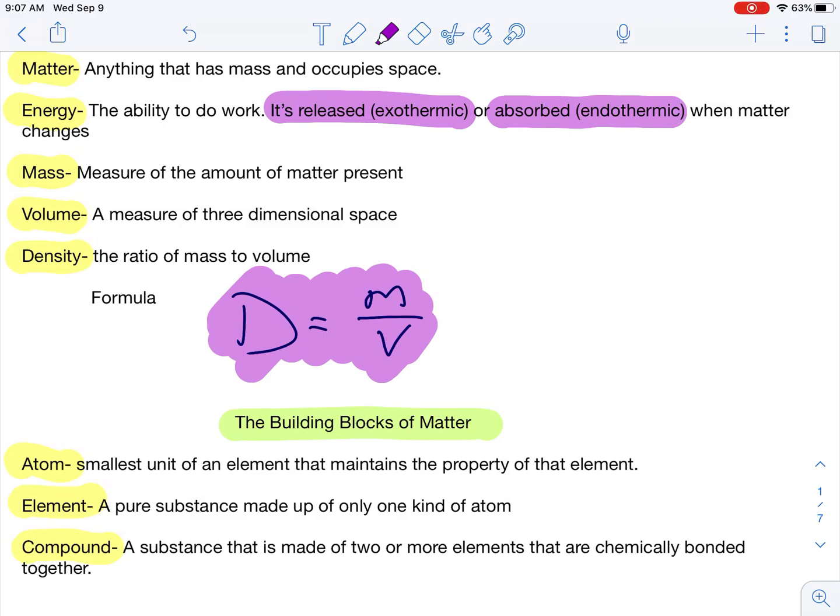For this formula, it is a three-variable formula. I'd expect you guys to be able to manipulate that formula to solve for any of those variables. So, I could give you the density and volume of something, and you'd have to solve for its mass.